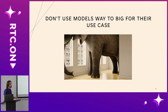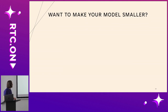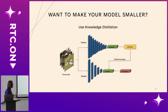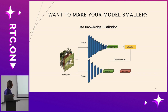Another guideline: don't use models way too big for your use case. You don't need to overextend yourself for a few percent more accuracy — you still want your model to be small and efficient, which is often more important than using the best-scoring solutions on the market. But if you want to make a model smaller, you can use knowledge distillation — a technique to train a smaller neural network more effectively. If you have a bigger neural network, you can employ it as a teacher for a smaller student network. This way, the student can learn much better than it would on its own, and sometimes can match the bigger network's performance while being much more efficient.